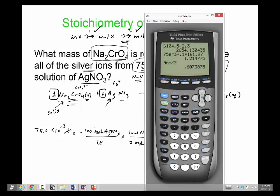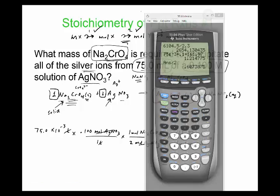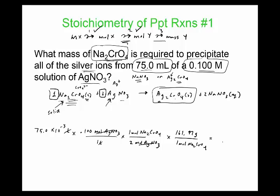so we should have, because of our measurements here, so our two measurements are molarity and the volume. So out of those, that's three sig figs, so our answer should be three sig figs, 0.607. So 0.607 grams of sodium chromate should be used.